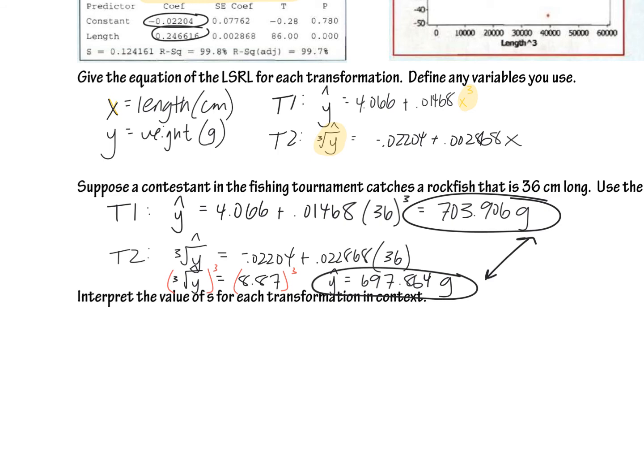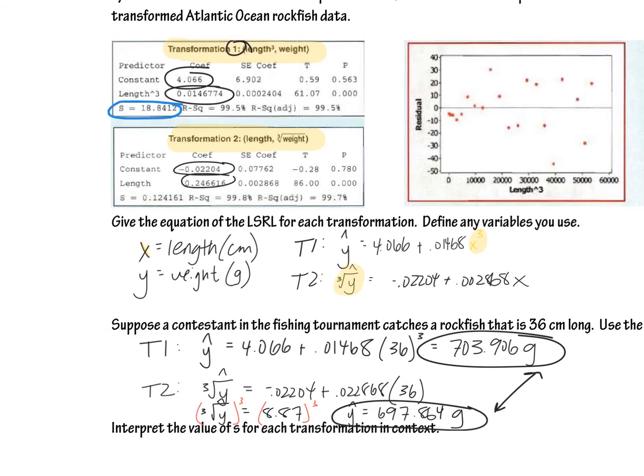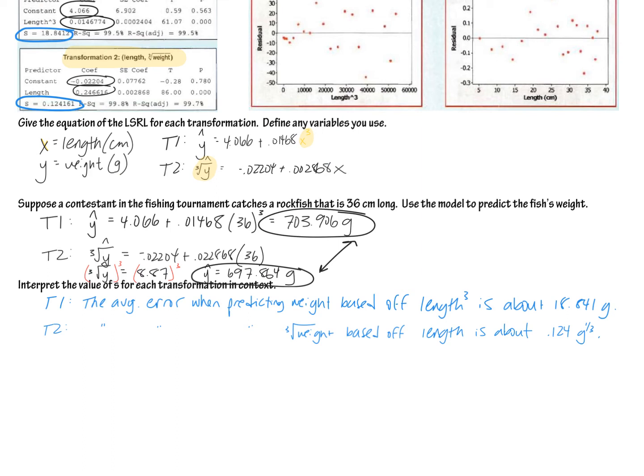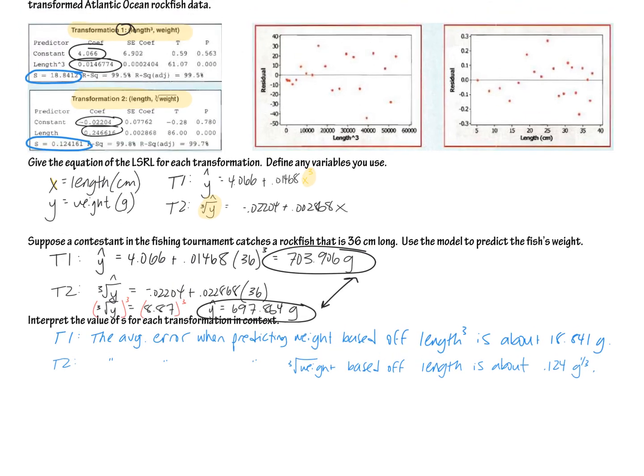And so that's the only thing that I wanted to kind of point out here. Let's talk one more bullet point here is the value of s. So just to reiterate, we still have this value of s down here. We just need to be really careful when we're writing our interpretation. So I paused and I wrote this out. Remember that s is the average prediction error. And so the way that we write that interpretation, since we have two different linear transformations, we have two different average errors. But again, you just have to pay really close attention to the units. And so for the transformation one, remember that was the cube of the length by the width. So the average error when predicting the weight, we're predicting like the regular normal weight up here in transformation one. So regular weight based off length to the third, that's what we're basing our prediction off of. So that needs to be length to the third. That's really important. Transformation is about 18.841 grams. And the grams is the weight, just the normal straight up weight in grams.